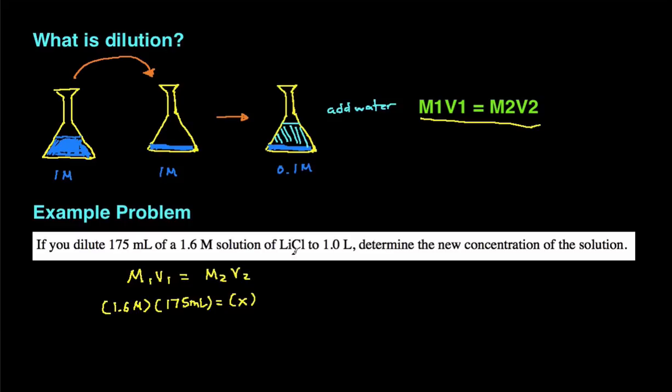V2 is the final volume. So it says we dilute the solution to a final volume of one liter. Notice on the left-hand side, V1 is in milliliters. So we need to make V2 milliliters as well. One liter is 1,000 milliliters.